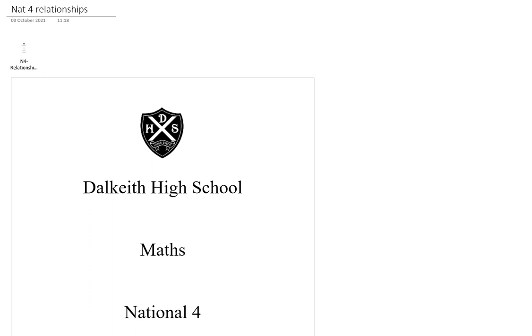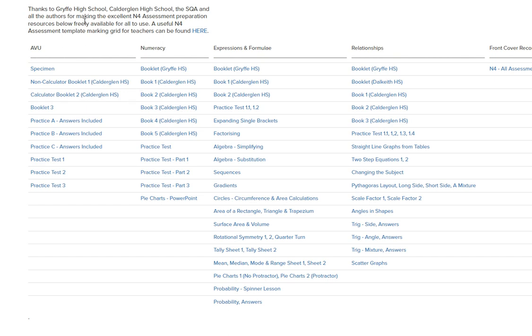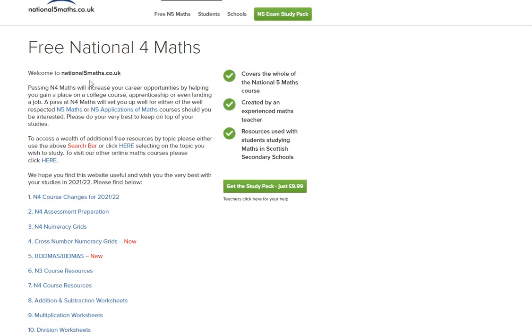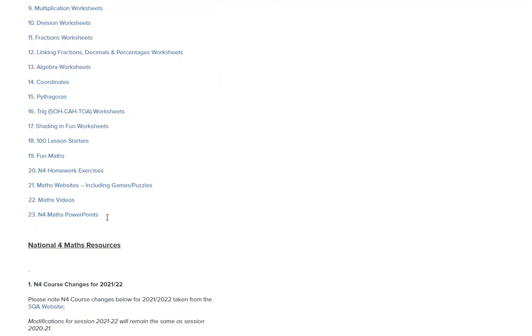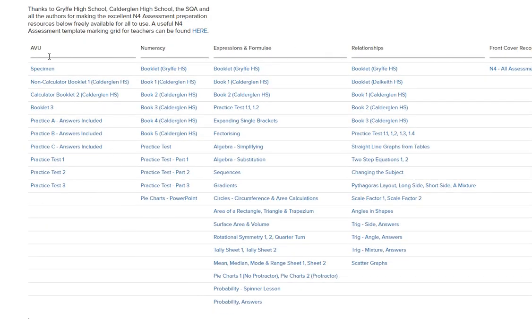We're going to look at the Dalkeith High School specimen papers. There's three of them and they can be found, as I said before, if you go to the National 5 website and go to all resources, go to National 4. If you go to assessment preparation, you can reach them here.